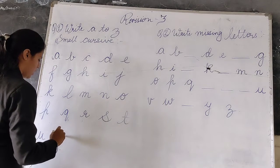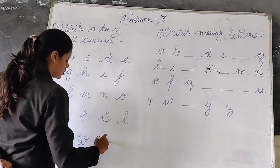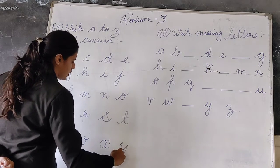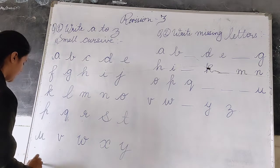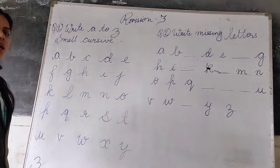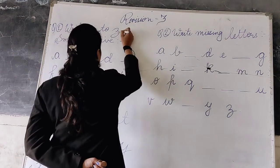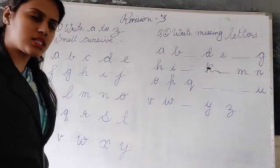U for umbrella, V for van, W for watch, X for xmas tree, Y for yard, and Z for zero. Okay, so this is how we completed our question number 1st. Okay.